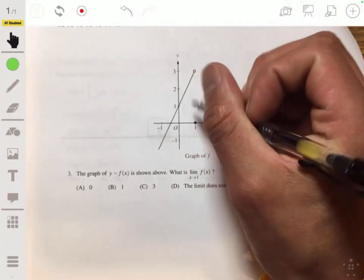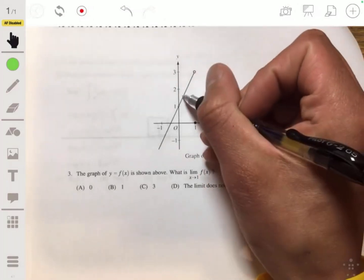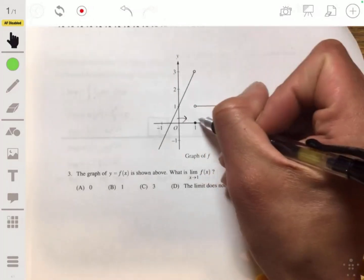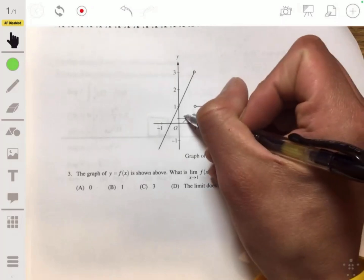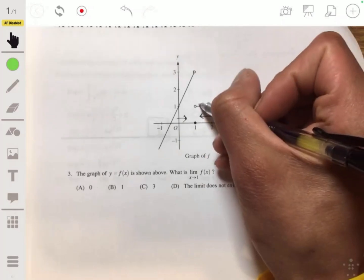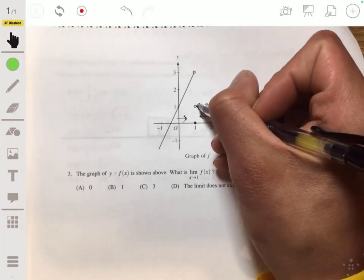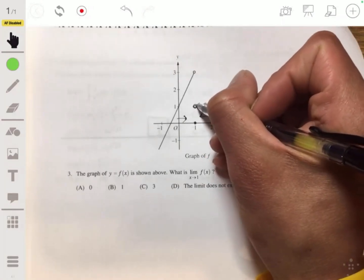Now, for the limit to exist, that means that when you approach it from the left and the right, you're going to have the same value. But as you can see, from the left we're approaching this point here at 1.